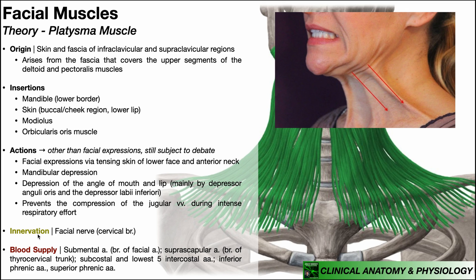The innervation of the platysma is by cranial nerve seven — the facial nerve — specifically through its cervical branch. Its blood supply is numerous: partly from the submental artery, a branch of the facial artery; partly from the suprascapular artery, a branch of the thyrocervical trunk; and also contributions from the subcostal and lowest five intercostal arteries, as well as the inferior and superior phrenic arteries.